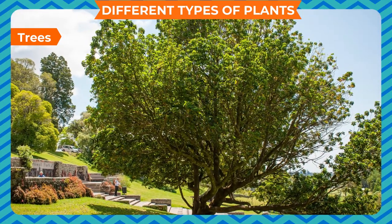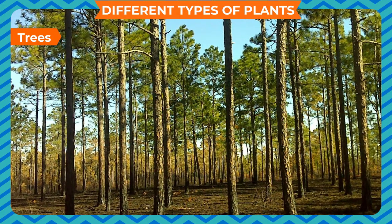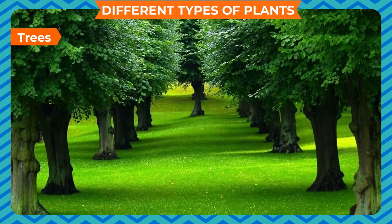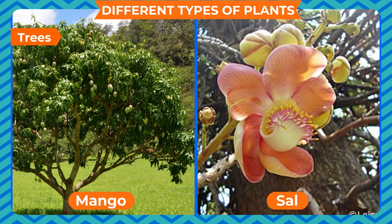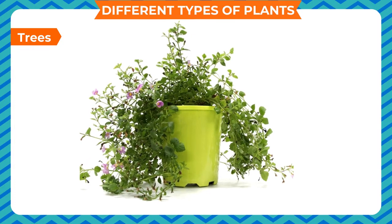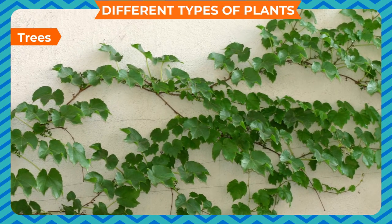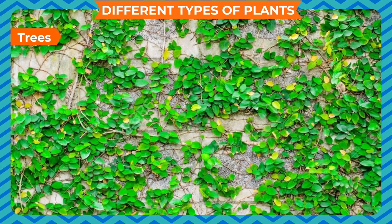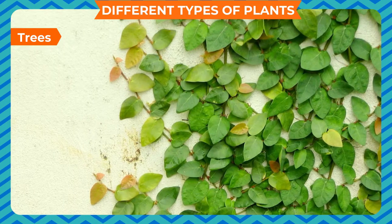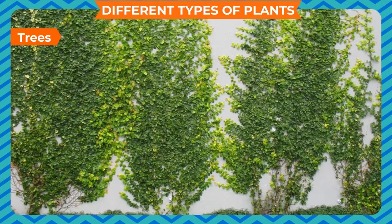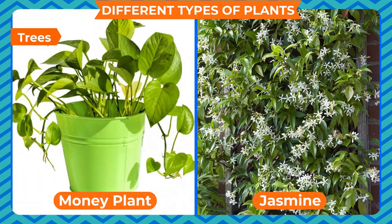Trees survive for many years and can grow up to several meters in height. Some examples of trees are banyan, neem, teak, sal, and mango. Apart from these, some plants cannot stand upright because of their weak stems — they are called creepers, as they spread out on the ground and grow horizontally. Examples of creepers are pumpkin, watermelon, and strawberry. Some plants are called climbers because they need support to climb. Examples of climbers are grapevine, jasmine, and money plant.